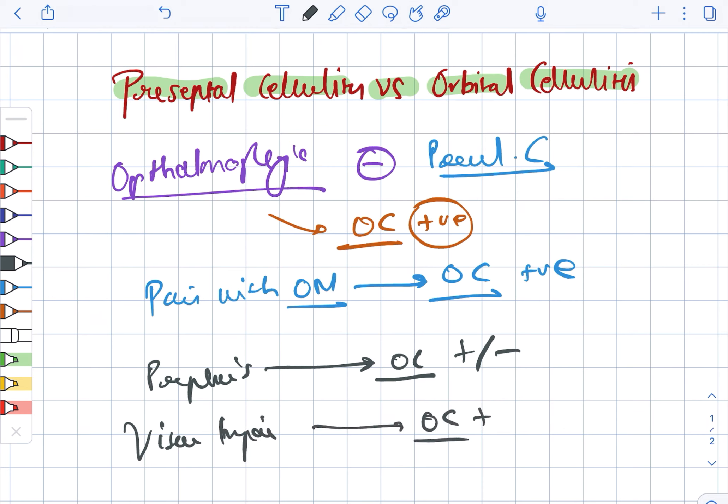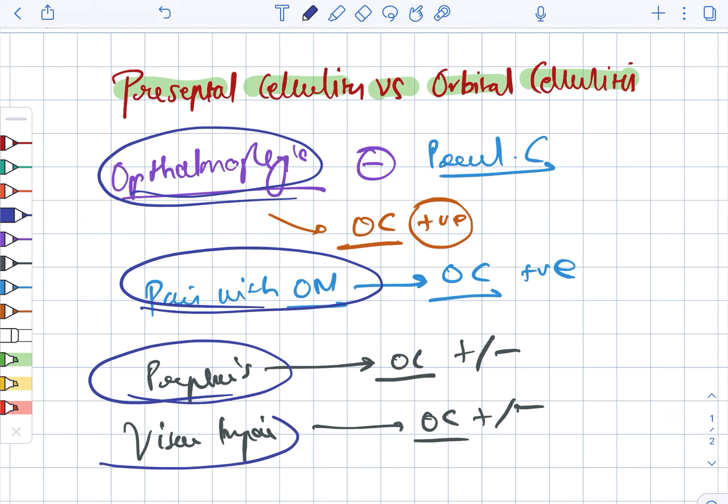Vision impairment can also be positive or negative in orbital cellulitis. Looking at all these points such as ophthalmoplegia and pain with ocular movements,